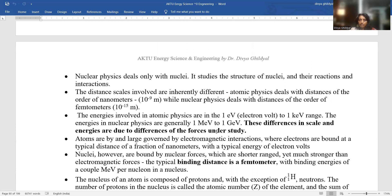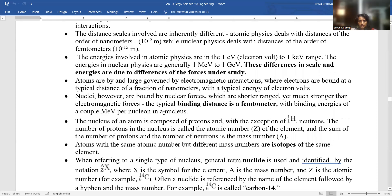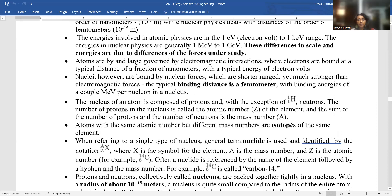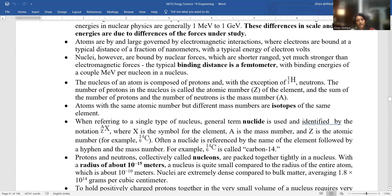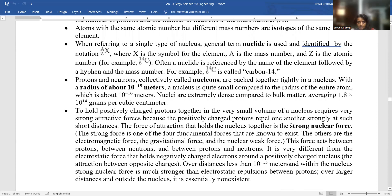The distance scales involved are basically of the order of nanometer or femtometer. Atoms are by and large governed by electromagnetic interactions. Nuclei however are bound by nuclear forces which are short range. Nucleus of an atom is composed of protons with the exception of H-1-1 neutrons. Atoms with same atomic number but different mass number are known as isotopes and the ones with same mass number and different atomic number are known as isobars.